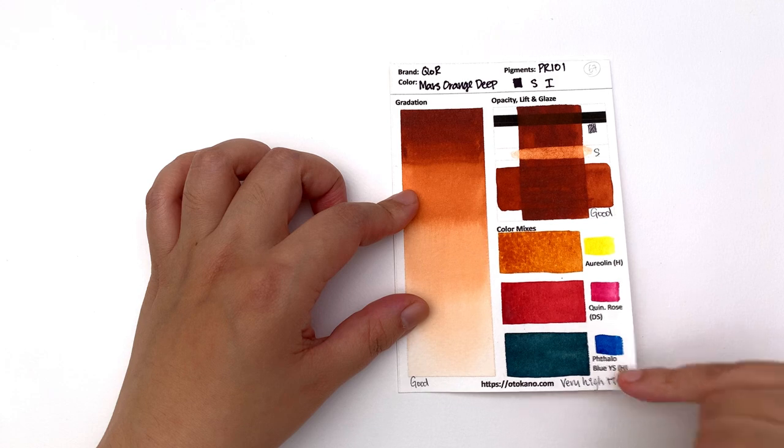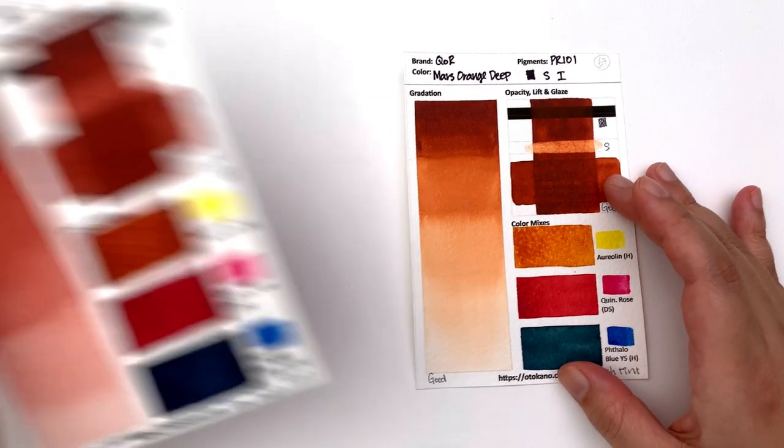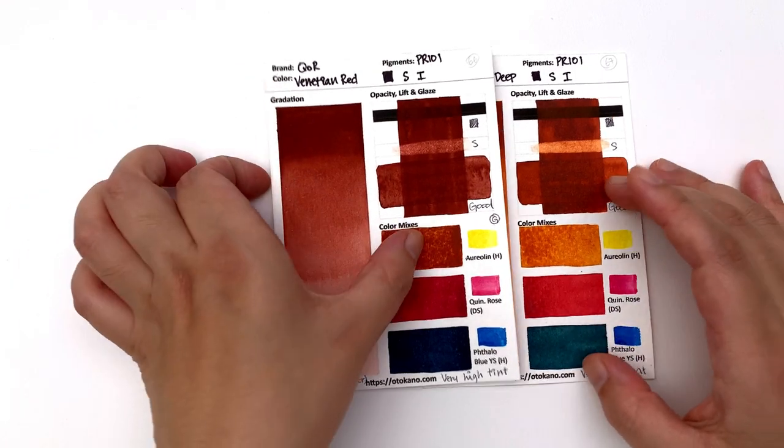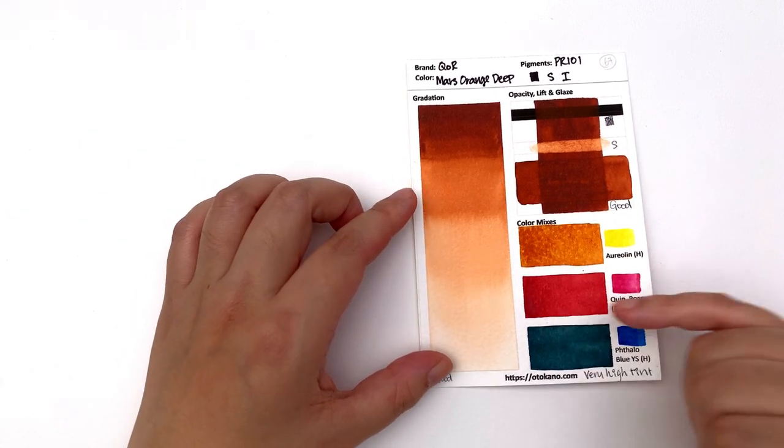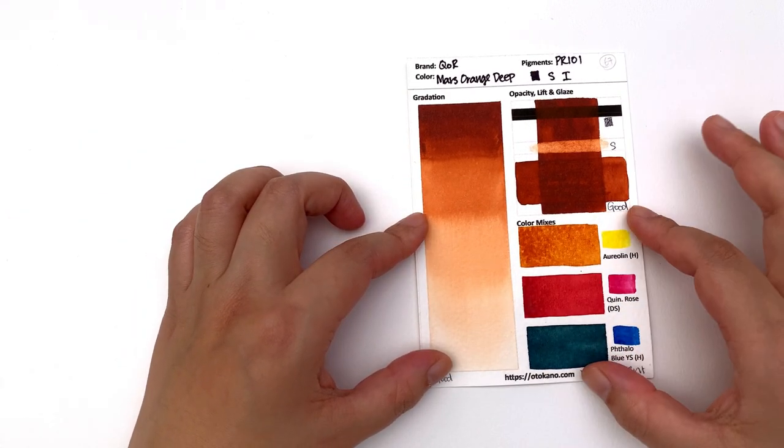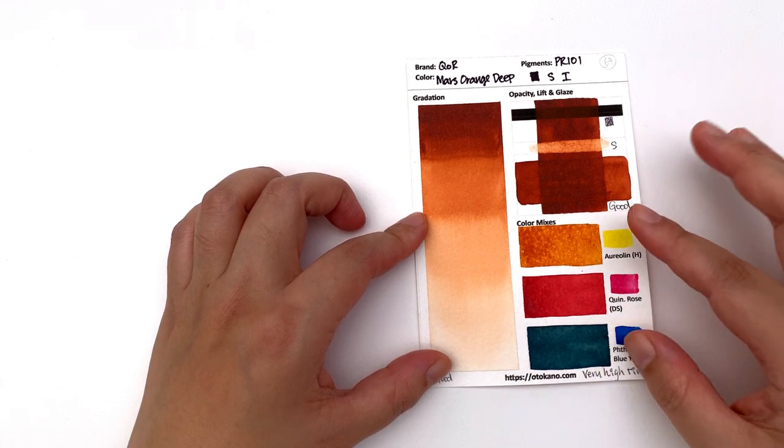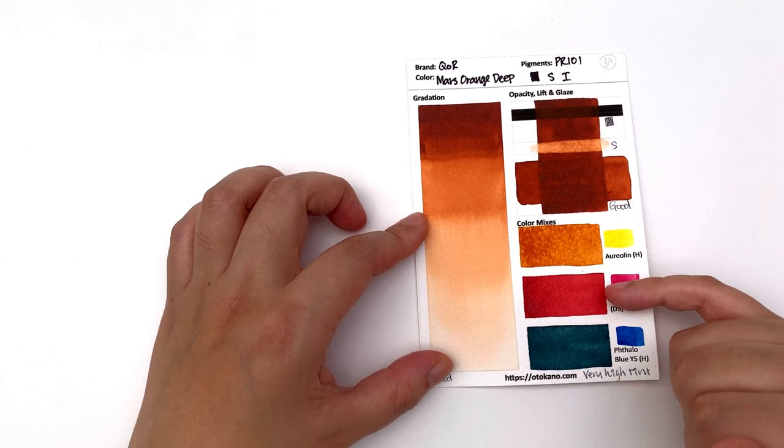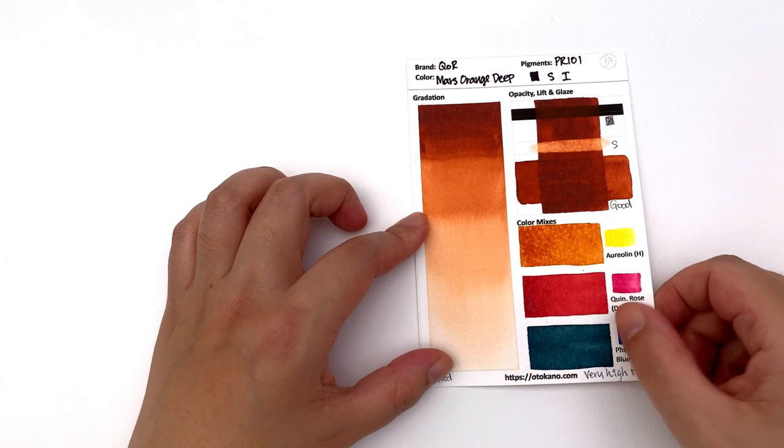It is again very high tinting strength, not as high as venetian red, but it's still considerably high compared to some other colors. It creates again these mottled textures on cold press paper. Just to remind you, this is on Buckingford cold press paper with the especially Westerley, and you see a lot of texture happening, not so much with the queen rose and the phthalo blue yellow shade.